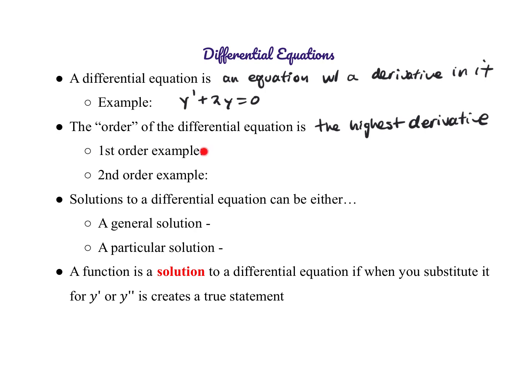A first order equation is when your highest derivative is just the first derivative. A second order equation is one that has a second derivative, so maybe it looks like 3y prime plus 2y double prime equals xy. So whatever the highest derivative is dictates the order of the differential equation.